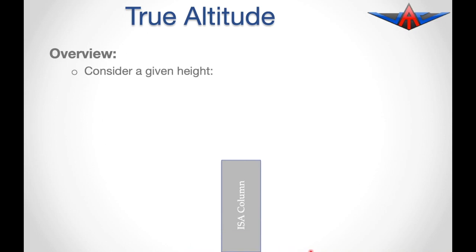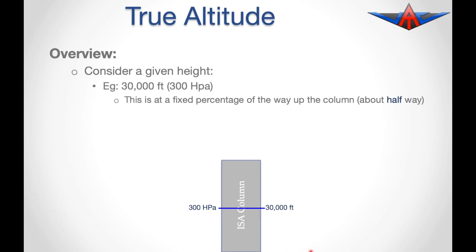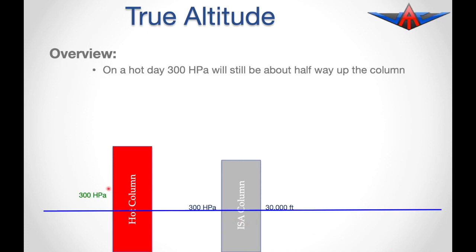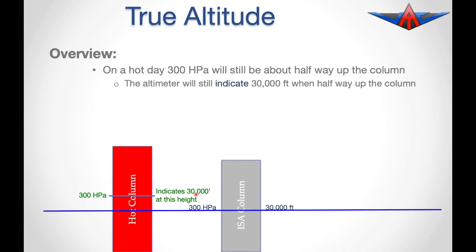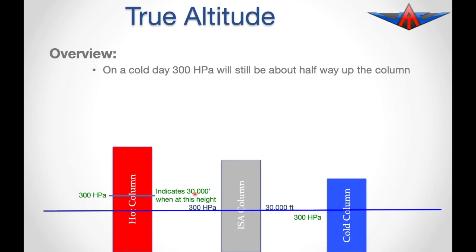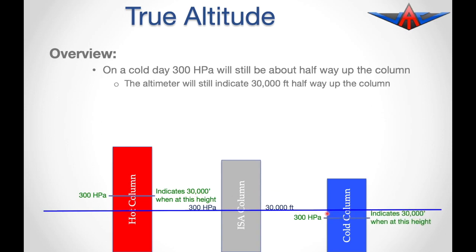Let's consider a given height — for example, 30,000 feet, which would have a pressure of 300 hectopascals. This is a fixed percentage about halfway up the column. On a hot day, 300 hectopascals is still halfway up the column, and the altimeter would still indicate 30,000 feet, but the actual position of 300 hectopascals will be higher than in ISA. The opposite is true on a cold day: 300 hectopascals is still about halfway up the column, but its actual position is lower than it should be.